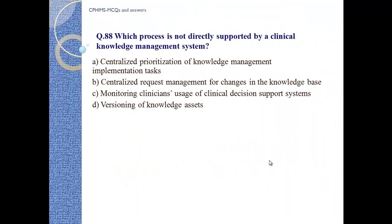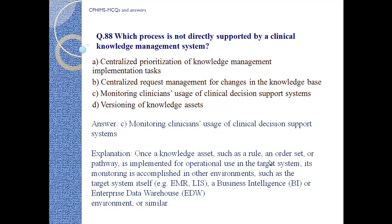Question number 88: Which process is not directly supported by a clinical knowledge management system? A. Centralized prioritization of knowledge management implementation tasks, B. Centralized request management for changes in the knowledge base, C. Monitoring clinician usage of clinical decision support systems, D. Versioning of knowledge assets. Answer C: Monitoring clinician usage of clinical decision support systems. Once knowledge assets such as rules, order sets, or pathways are implemented for operational use in a target system, their monitoring is accomplished in other environments such as the target system itself.